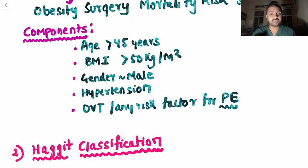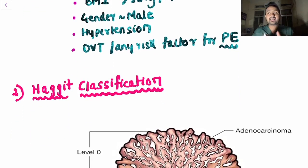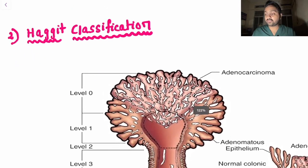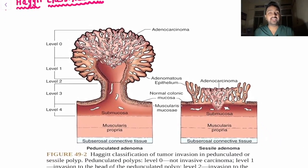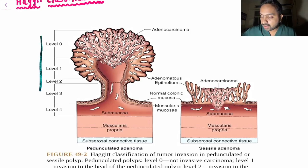The next question is on Haggitt classification, a very important topic. This is the classification used for your polyps. Looking at a diagram from a standard GI textbook, we first have the pedunculated adenoma — this is the classification for pedunculated polyps.